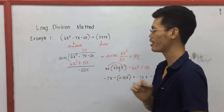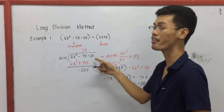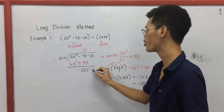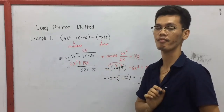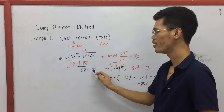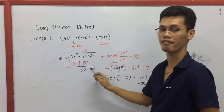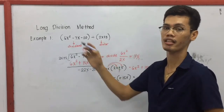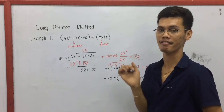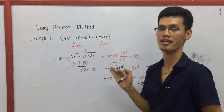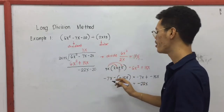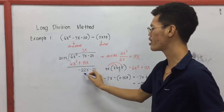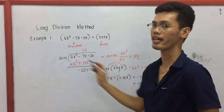The last step is to bring down the remaining terms of the dividend. We bring down negative 20. Afterwards, since there is still a variable, we have to repeat the process — go back to divide, then multiply, subtract, and bring down. So we divide negative 22x by 2x.